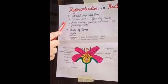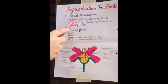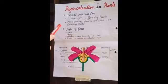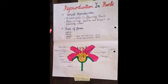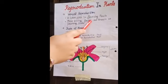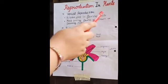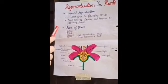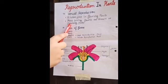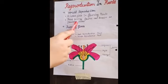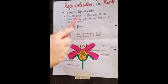Sexual reproduction takes place in flowering plants. What are flowering plants? Plants that bear flowers are known as flowering plants. That is, jin plants pe flowers aate hain unko hum flowering plants bolte hain.